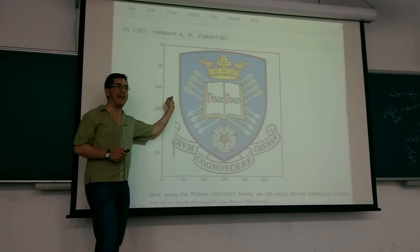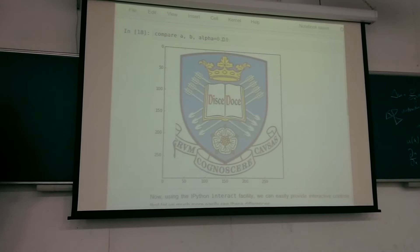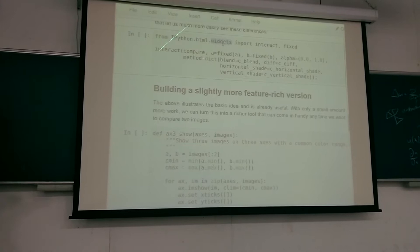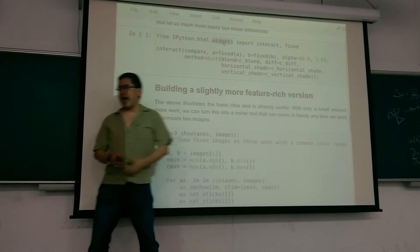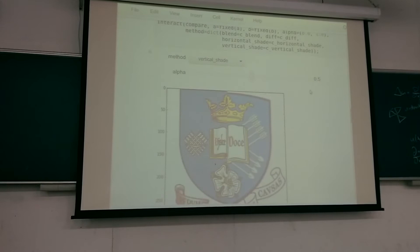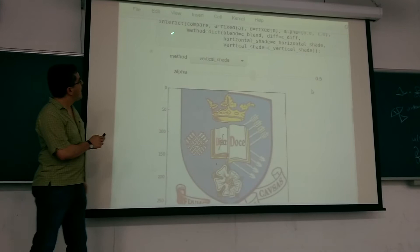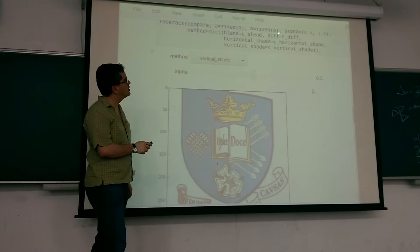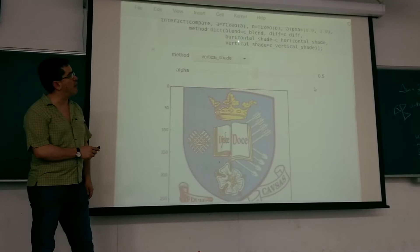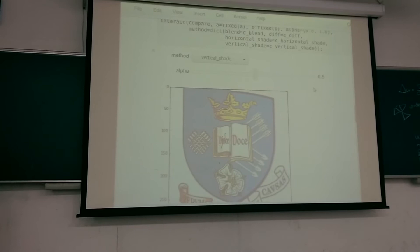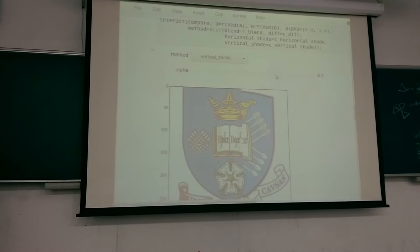Wouldn't it be nice if I had a slider to drag and compare the two images? This bit of code right here is all you need to get exactly that. If instead of calling the compare function directly you say 'I want to interact with the compare function,' with two images A and B fixed and multiple comparison methods, now you have something that lets you drag the slider.